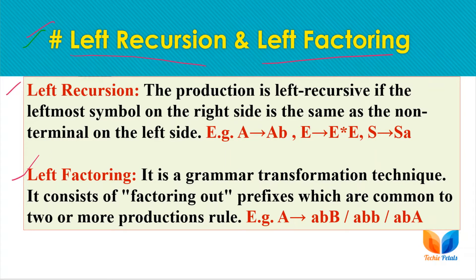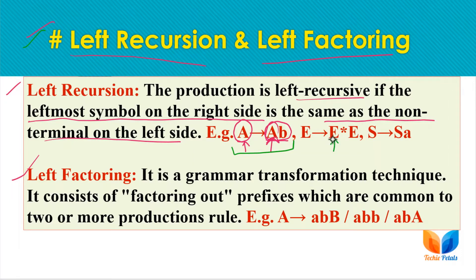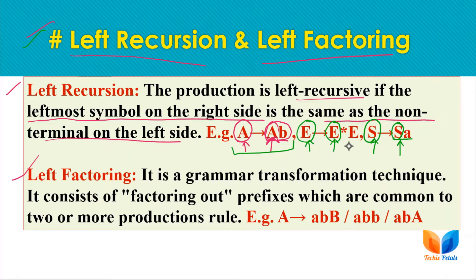The first problem is left recursion, where production rules are left recursive if the left-most symbol on the right-hand side is the same as the non-terminal on the left-hand side. So this left-most symbol being the same as the non-terminal on the left-hand side makes the rule a left recursive rule. Similarly, if the left-most symbol of the right-hand side matches the non-terminal on the left-hand side, that rule is also left recursive.